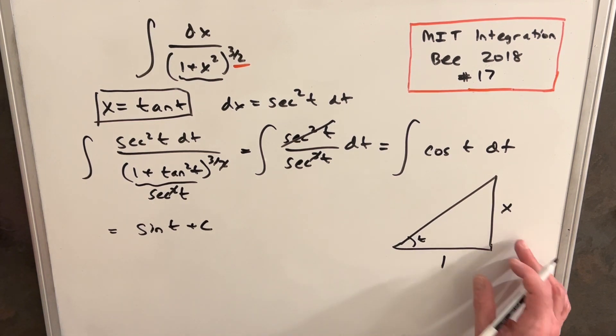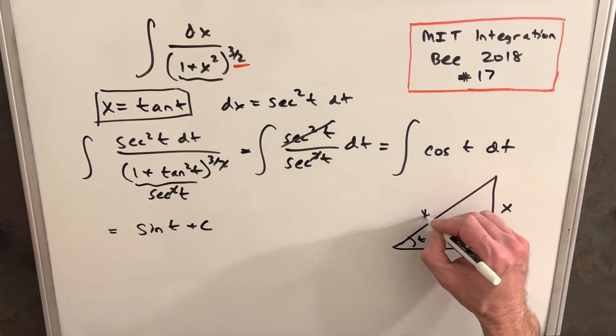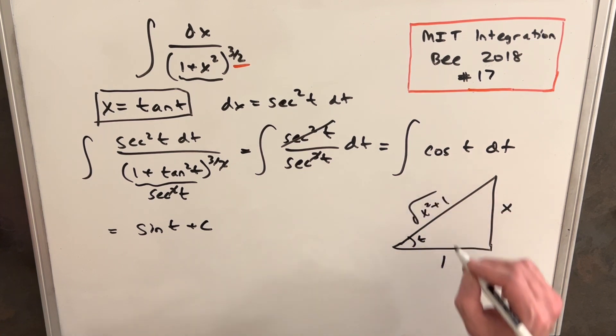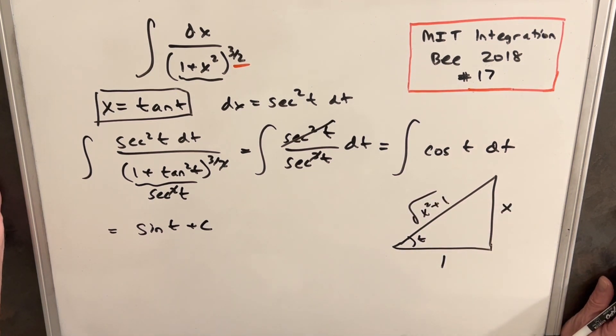There's other ways, but that's the simplest way. And then if we just do Pythagorean theorem, our hypotenuse has to be x squared plus one, the square root of x squared plus one.